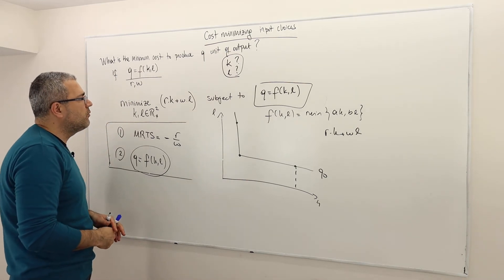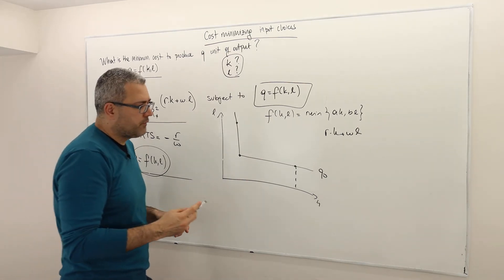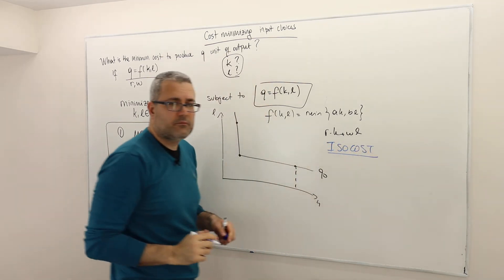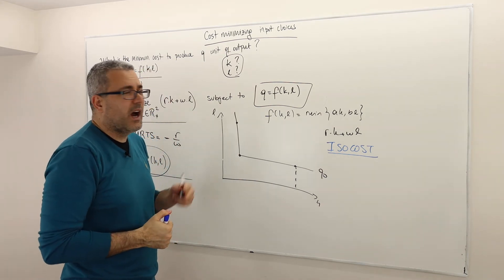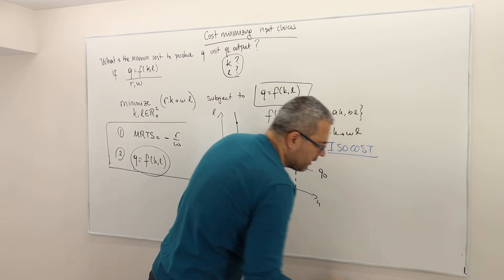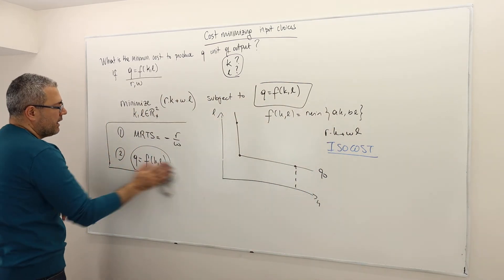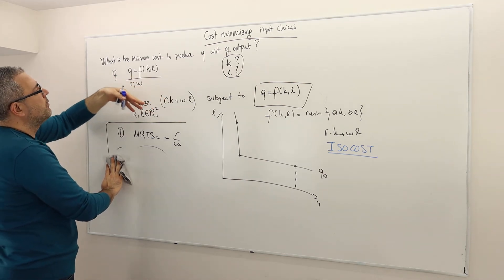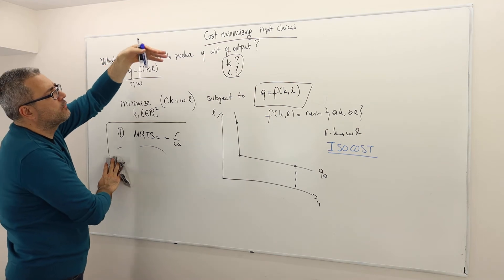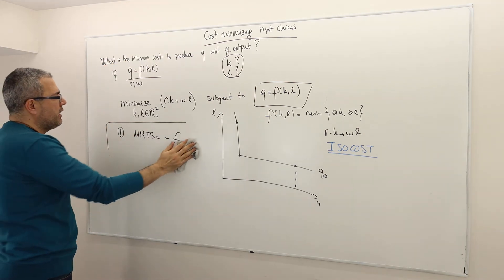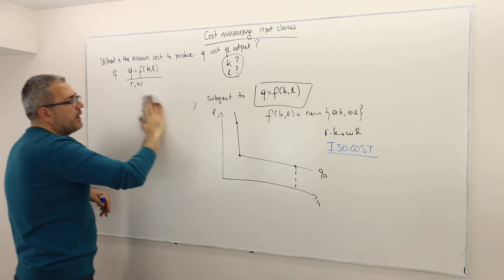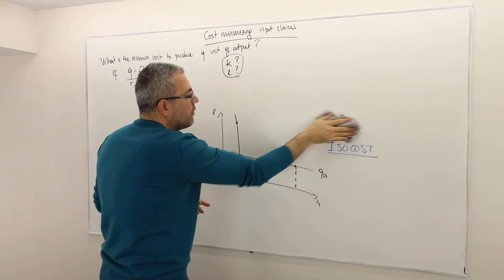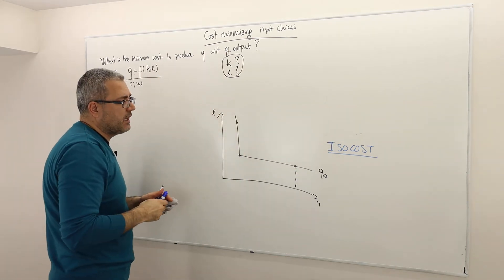There's an easier way than calculating the cost at every point. Draw the cost function — we call it the isocost. ISO basically means equal or equivalent, so the isocost represents combinations with equal cost. So the second approach is to graph the isoquant and isocost together.